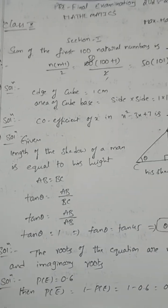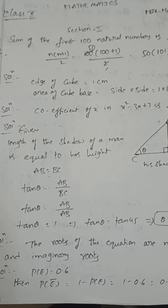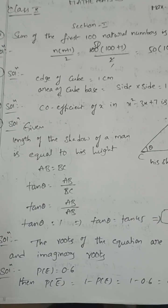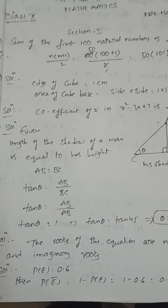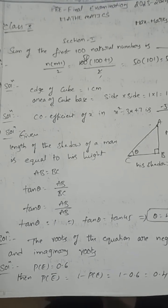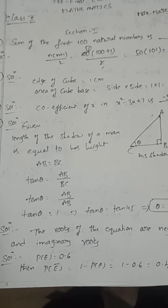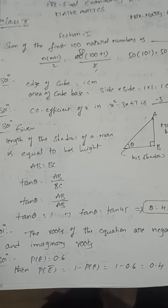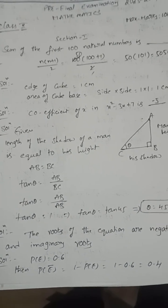Next, length of the shadow of a man is equal to its height. Find the angle of elevation. tan θ = AB/BC = AB/AB = 1. tan θ = tan 45°, so θ = 45°.